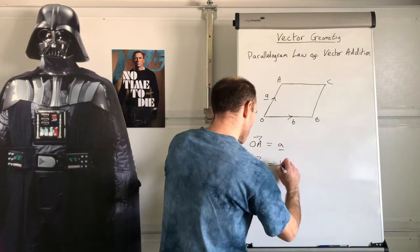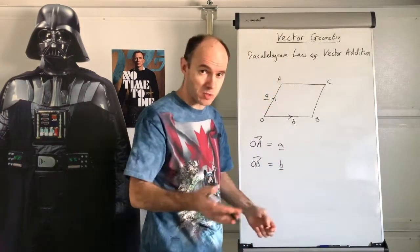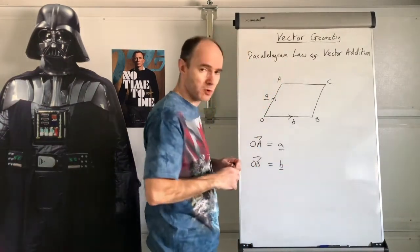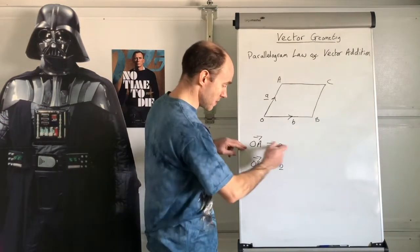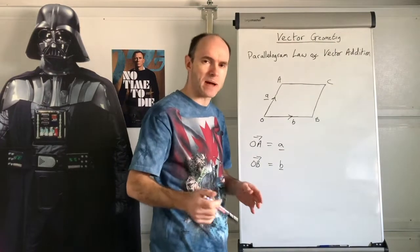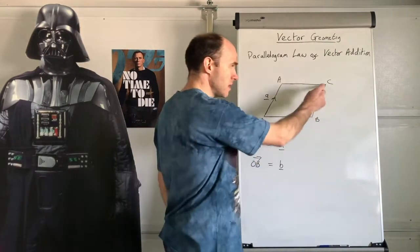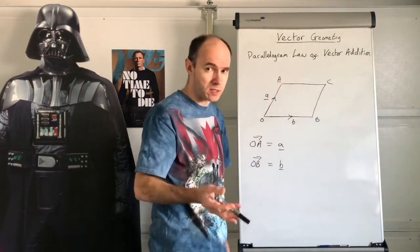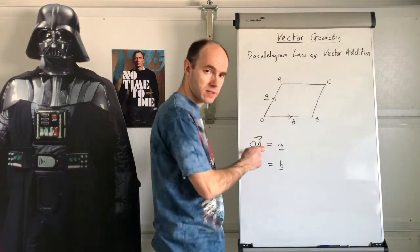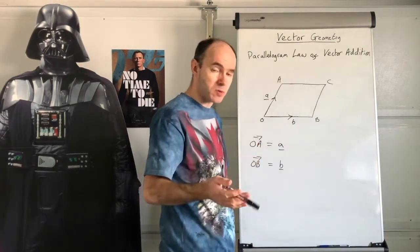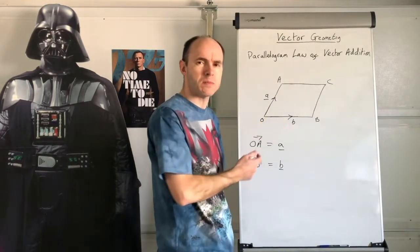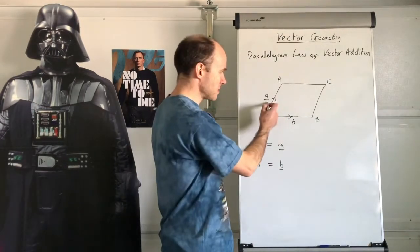We're going to derive some important results from that. I've also introduced both ways of writing down a vector: using capital letters that represent the vertices on a shape — from O to A — and also lowercase vectors underlined, which is another, often more frequent, way of representing a vector.